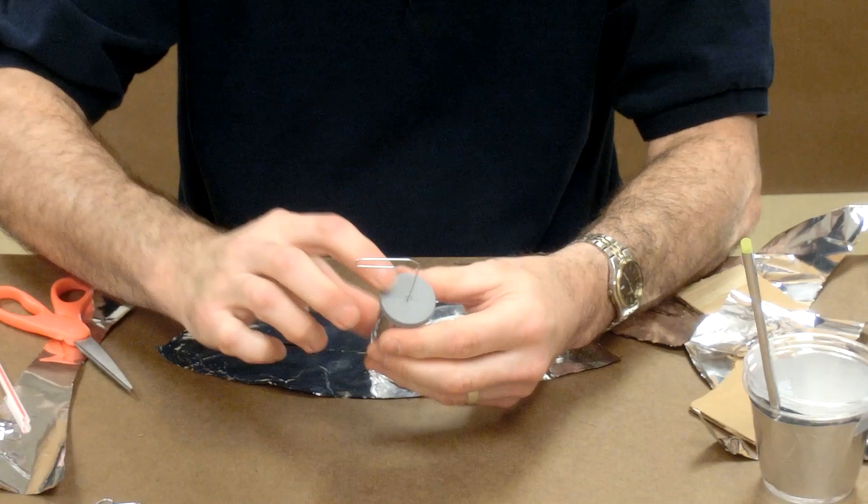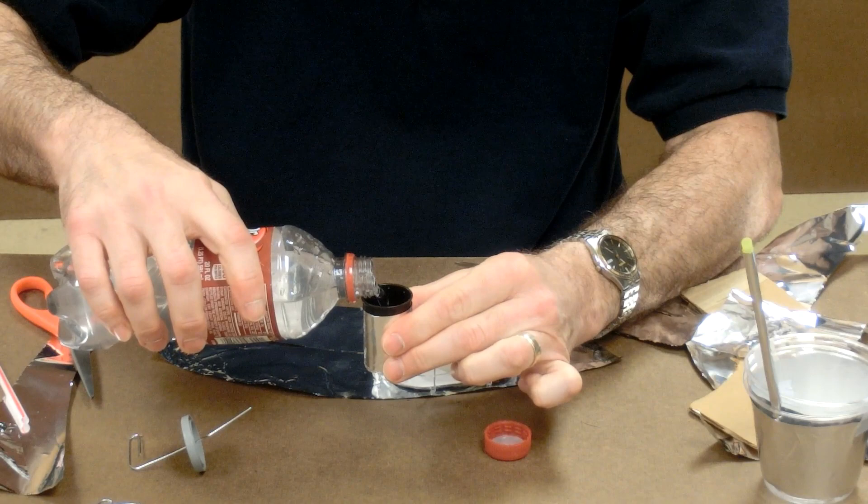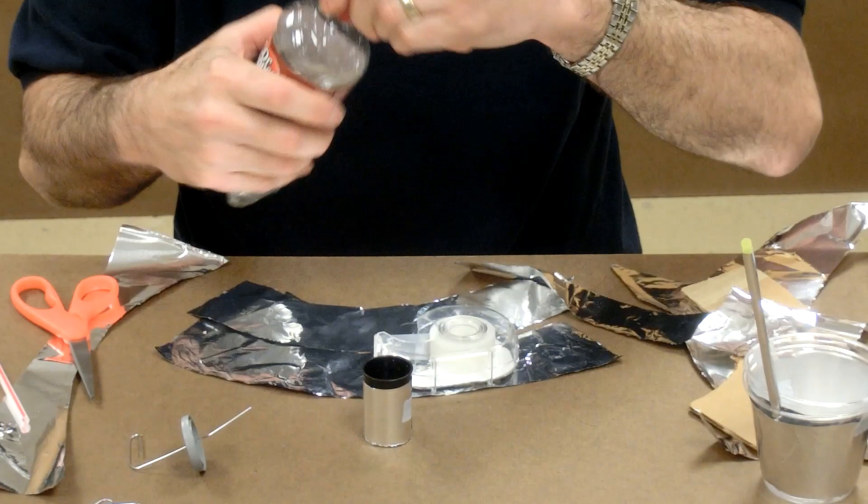And then inside of the film canister, I'm going to put some salt water. So some of the original Leyden jars were made this way, where they had a glass jar filled with salt water with metal wrapped around the outside of the glass jar.